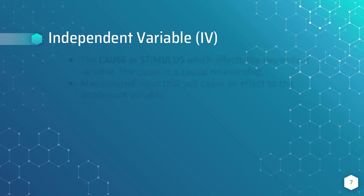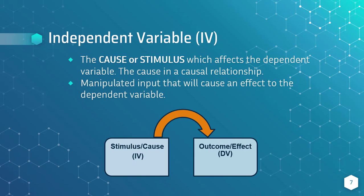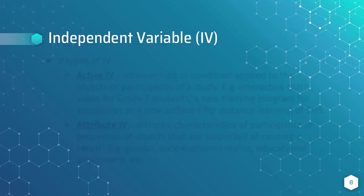Independent variable. It is known as the cause or the stimulus which affects the dependent variable. It is observed to be the cause in a causal relationship. It can also be thought of as the manipulated input variable that will cause an effect to a specific dependent variable. There are two types of independent variable.